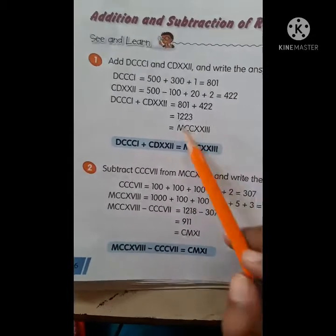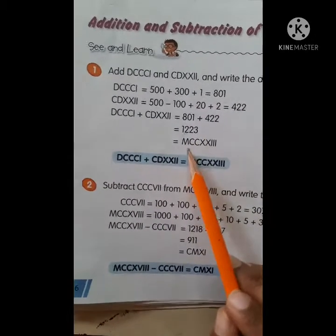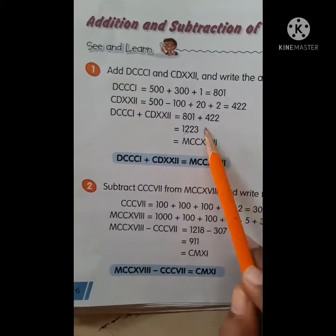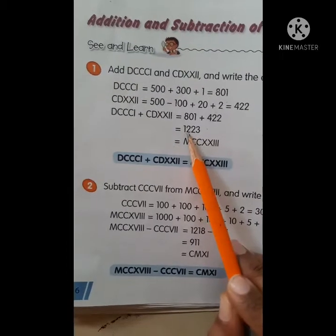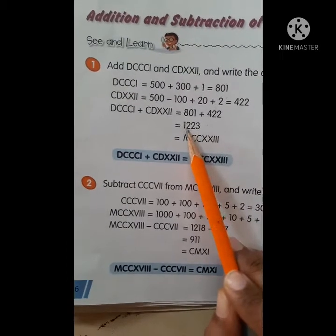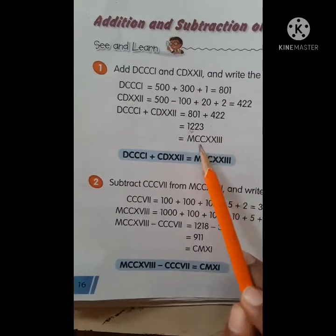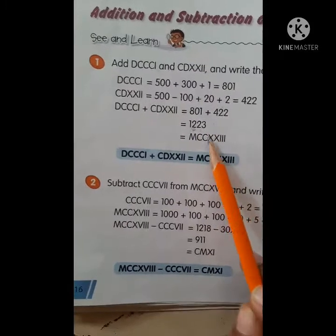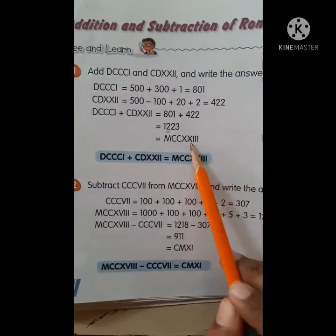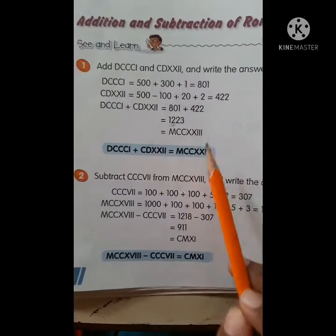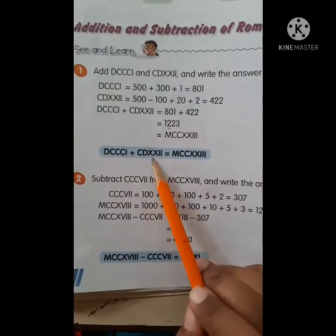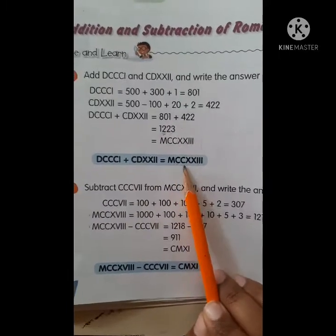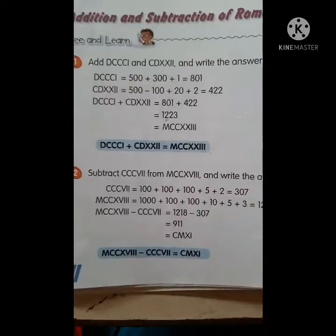So 1223 — the 1 is in the thousands place, so that is M. The 200 is in the hundreds place, so that is CC. The 20 is XX, and 3 is III. So the final answer written in Roman numerals is MCCXXIII.